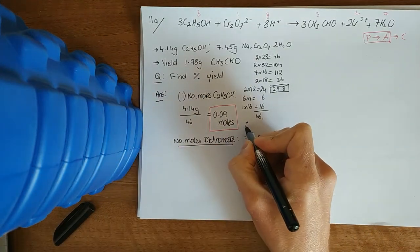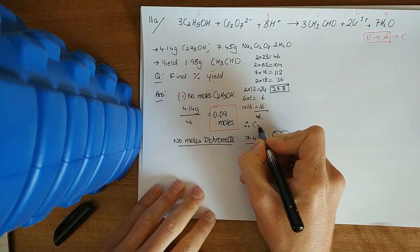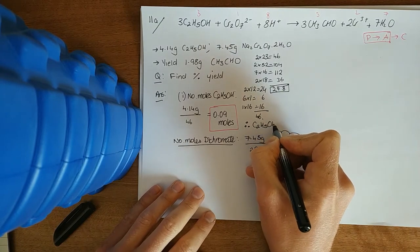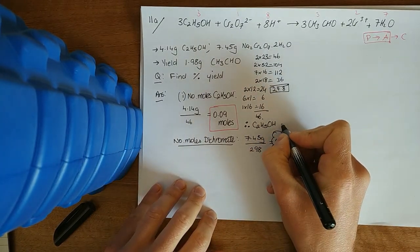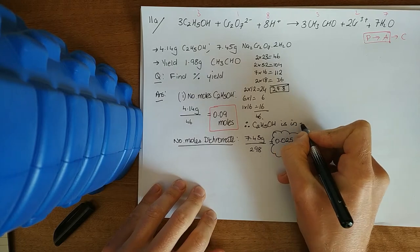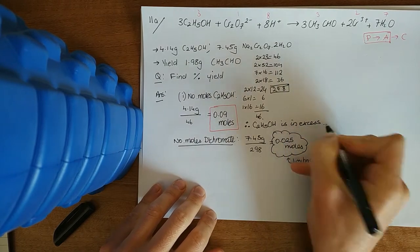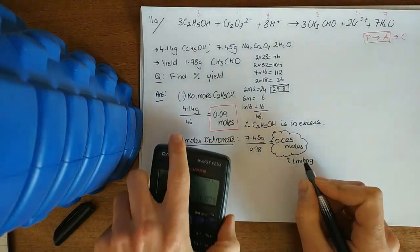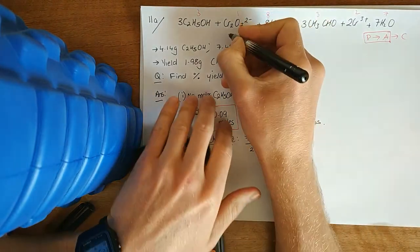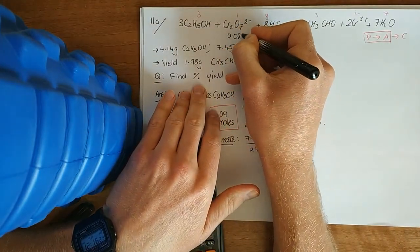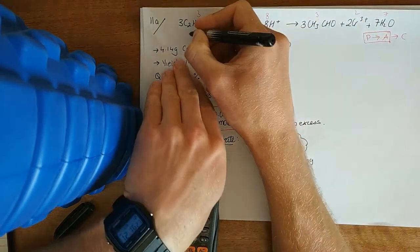And therefore, since they ask you which one's in excess, make sure, leave nothing fake. Ethanol is in excess. But this is the one we work with. So, 0.025 goes in up here. 0.075 goes in up there.